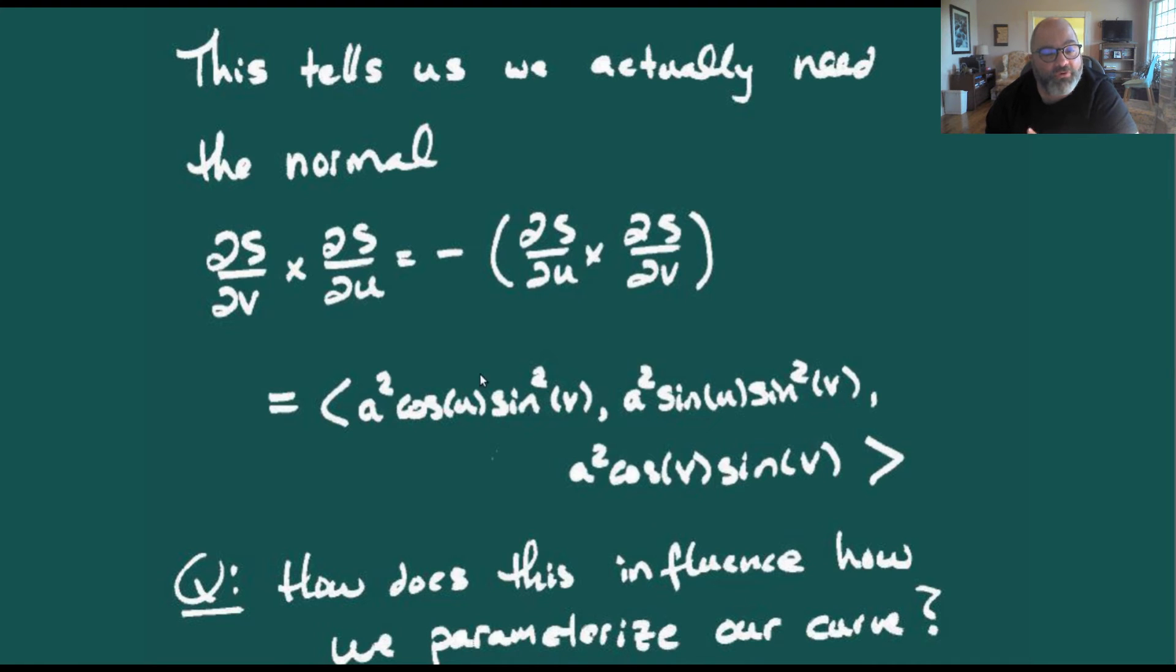To fix this, we reverse the order of our cross product. We take the normal vector as ∂s/∂v × ∂s/∂u, which gives us the negative of what we had. This is the normal to the surface that we actually want, giving us the correct parameterization.